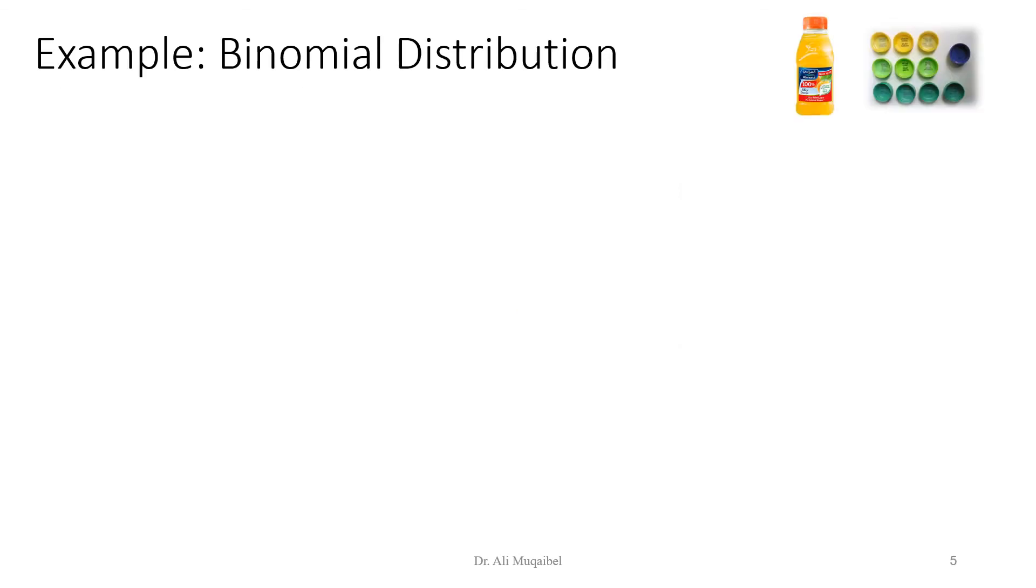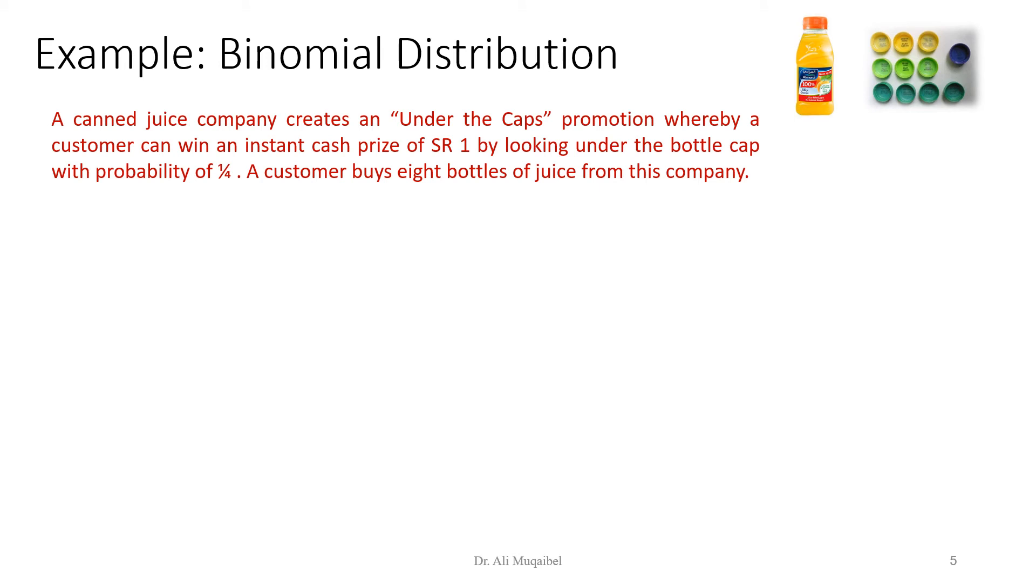All right, let's take another practical example. A binomial distribution. It says in the example that there is a canned juice company creates an under-the-cap promotion whereby a customer can win an instant prize of SR 1 by looking under the bottle cap, and that is with probability of one-fourth. So, on the average, in every four bottles, you get one real. A customer buys eight bottles of juice from this company. This is an example of Bernoulli's experiment, whether the outcome is either yes or no, win or loss.